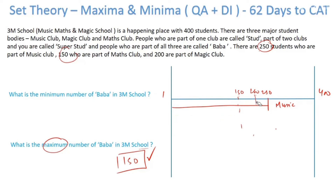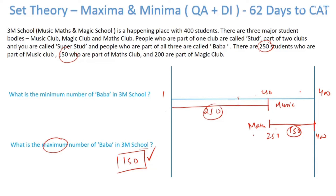To minimize, I skew the sets as far apart as possible. Music is from 1 to 250. I place Maths starting from the other end — from 251 to 400. Now there are zero people common between Music and Maths. Then I can place Magic anywhere — there will be no people common across all three clubs. So the minimum number of baba is zero.